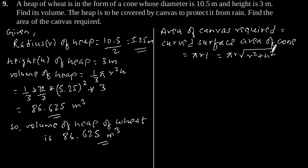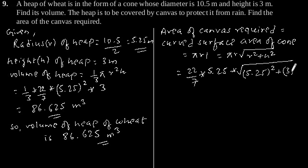Putting the values of r and h: 22/7 × 5.25 × √[(5.25)² + (3)²]. This equals 22/7 × 5.25, which gives 6.05. By multiplying, we get the area of canvas required as 99.825 square meters.